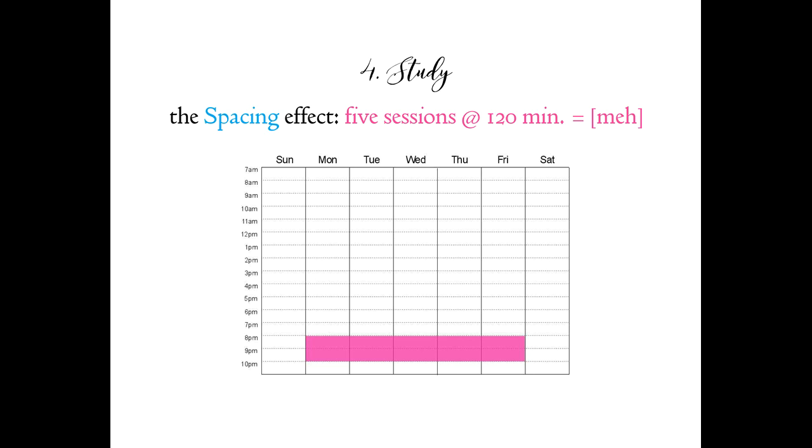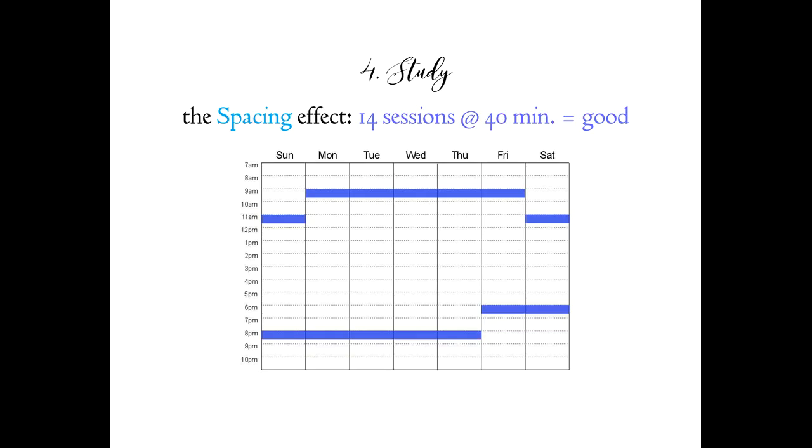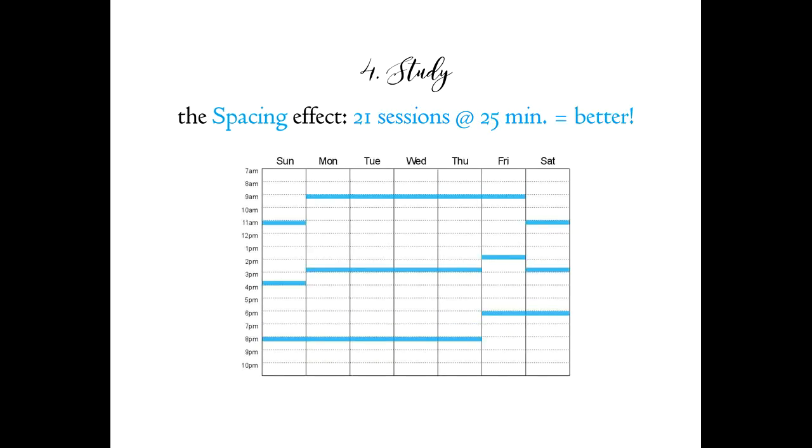So, instead of five 120-minute sessions with no study over the weekend, you're better off with 85 minutes per day, seven days a week. Better yet, instead of a single 85-minute block every evening, split that time into 40 minutes every morning and 40 minutes every night. Even better would be 25 minutes every morning, 25 minutes every afternoon, and 25 minutes every evening.